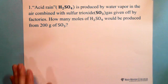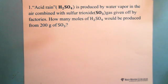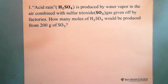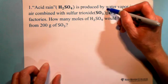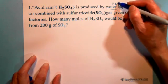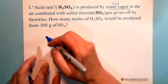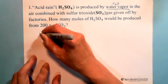Acid rain, H2SO4, is produced by water vapor in the air combined with sulfur trioxide gas given off by a factory. How many moles of H2SO4 would be produced from 200 grams of SO3? To follow the information, we need to write down the reaction equations. The question tells us H2SO4 is produced by water vapor, so water vapor is H2O.